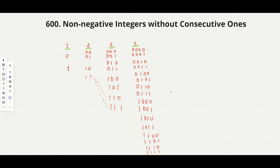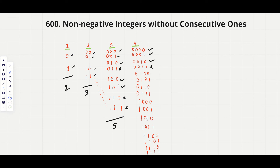Now let's count how many of these 4-bit numbers have no consecutive ones. Going through them: some are fine, some are not fine. After filtering, we get 1, 2, 3, 4, 5, 6, 7, and 8 valid numbers.